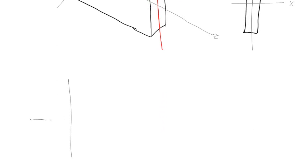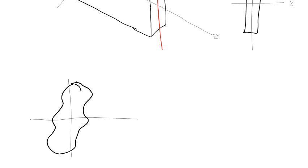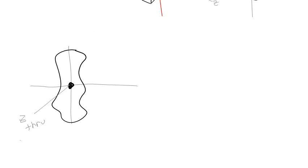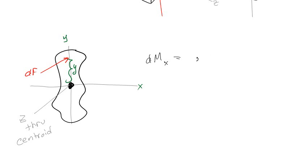I'm going to redraw my cross-section down here. There's really no reason it has to be a square beam, so I'll make my cross-section an arbitrary shape. The only requirement is that the Z-axis has to pass through the centroid. So I can change all the pressures into differential forces dF. Now I can look at the differential moment caused by that dF: the moment arm is Y, so the differential moment about the X-axis caused by dF is dM = Y · dF.